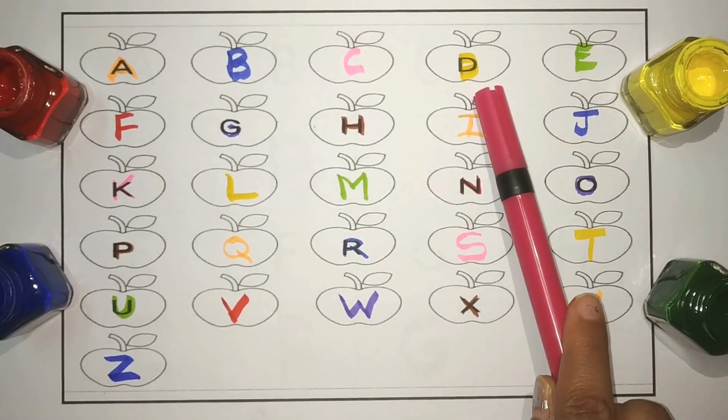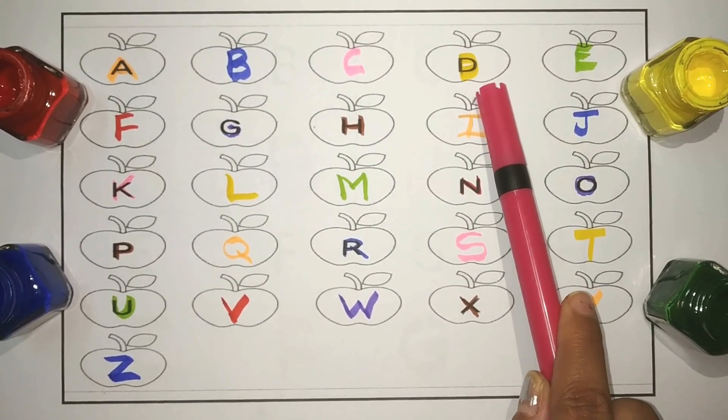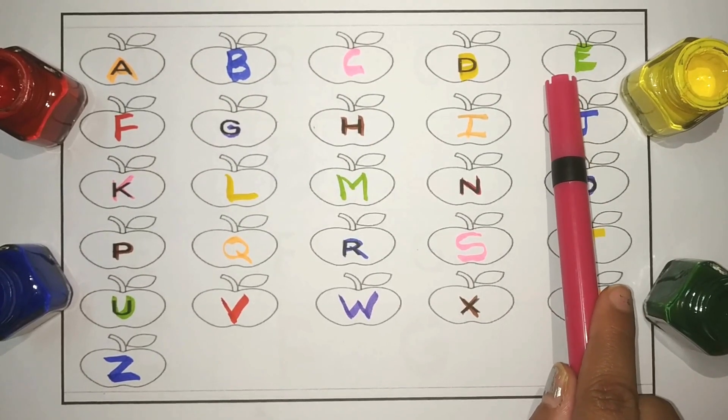D. D for dog. Bow bow. E. E for elephant.